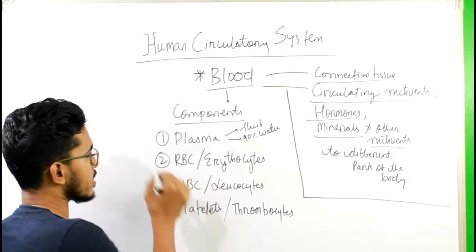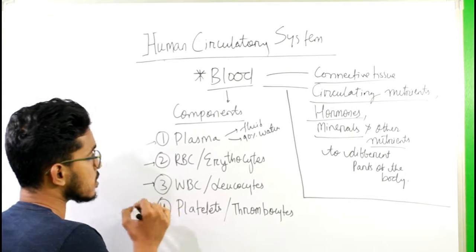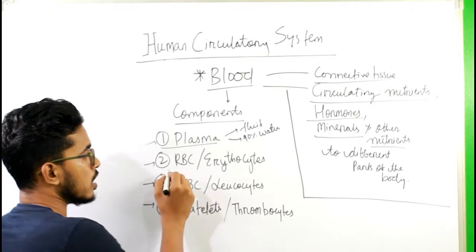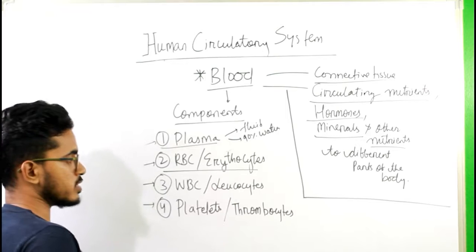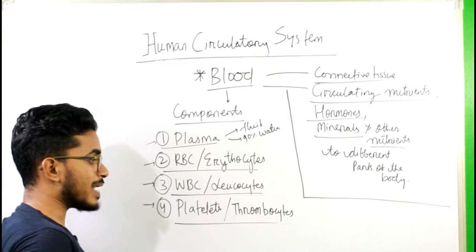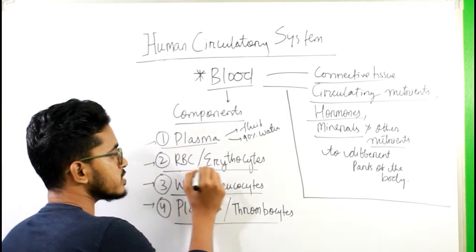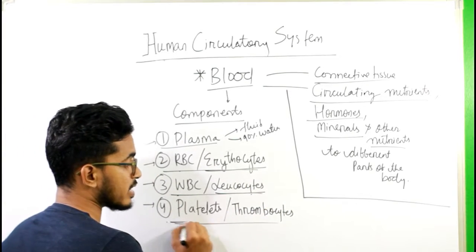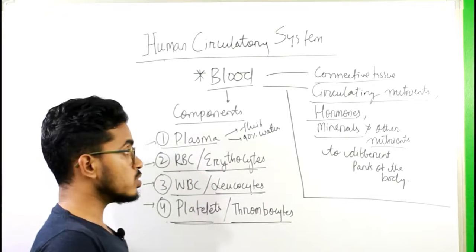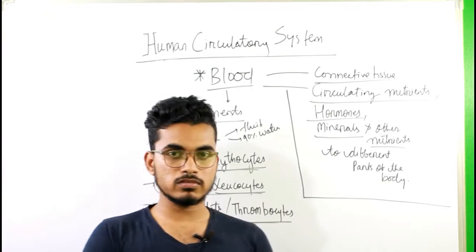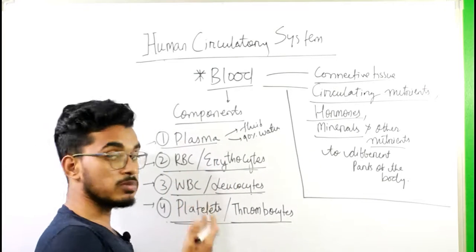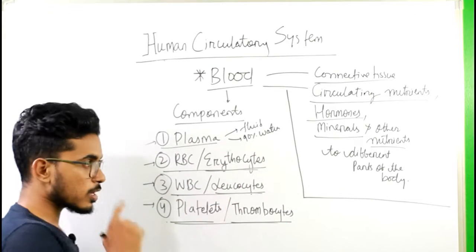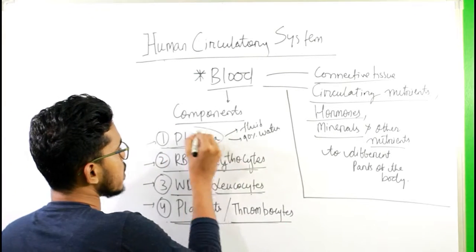There are four major components present in the blood. First is plasma, second is RBC, third is WBC, and fourth is platelets. The other name of RBC is erythrocytes, the other name of WBC is leukocytes, and the other name of platelets is thrombocytes. Now let us understand the role of each of them.